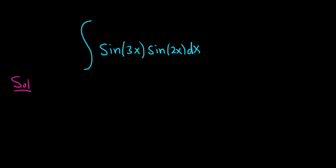So whenever you have something like this, sine of two different things being multiplied, you can use a trig identity. So recall that if you have the sine of a times the sine of b, that's equal to 1 half, parentheses, cosine of a minus b minus cosine of a plus b.